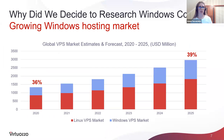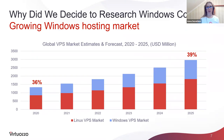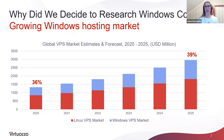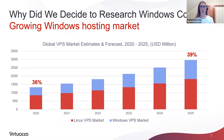We see the demand. Here is a virtual private server market forecast from global marketing data. It clearly shows that Windows hosting takes a significant part of the global hosting market — more than 30% and growing. The trend is also supported by market demand for agile infrastructure capable of delivering anything as a service, for Windows application delivery in particular.